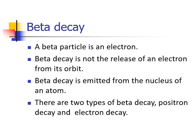Let's have a look at beta decay. We know that beta decay is a fast-moving electron, and we also know that beta decay is not the release of an electron from the orbit of an atom, but is actually emitted from the nucleus.